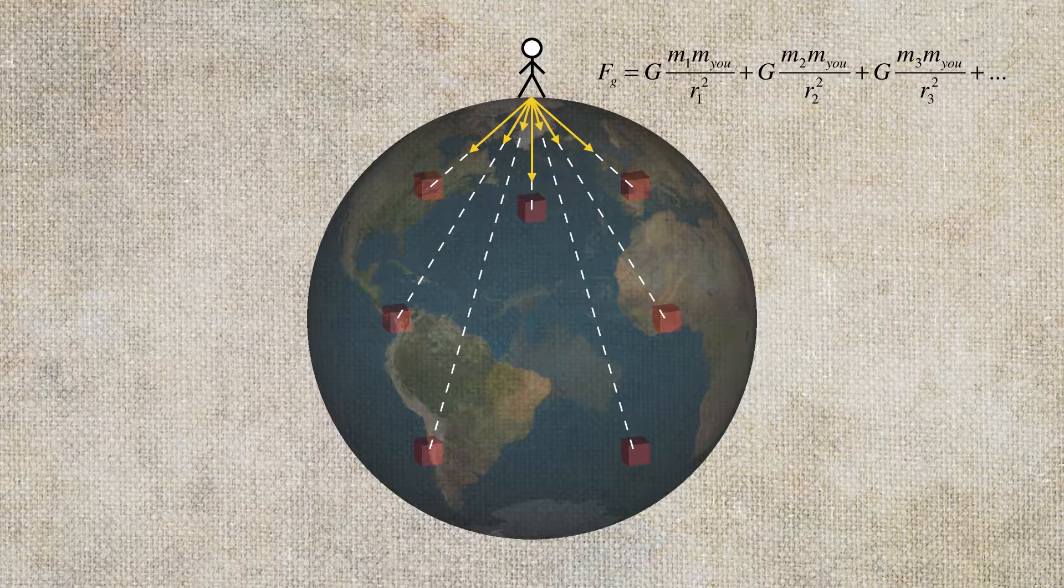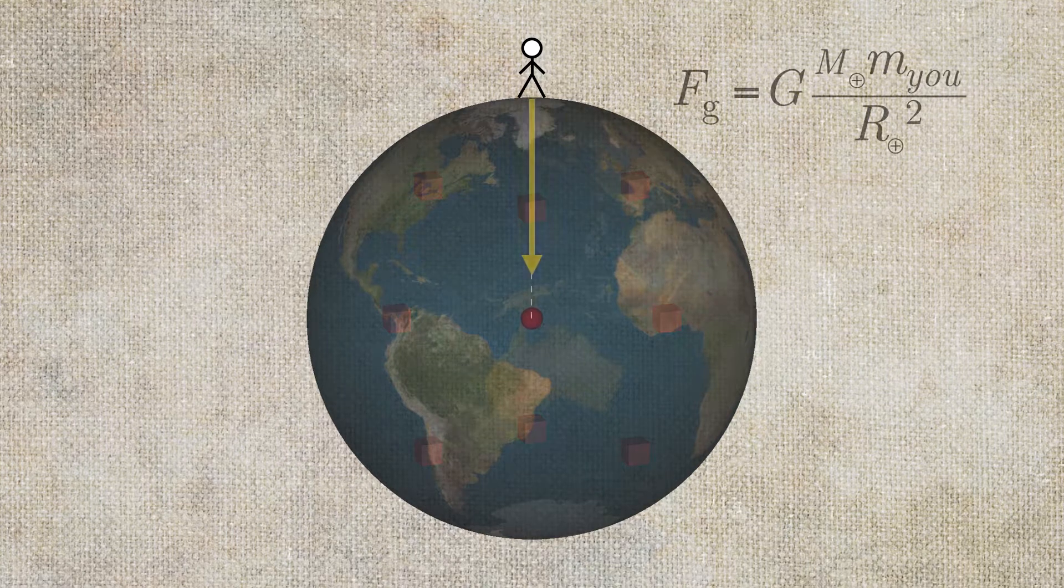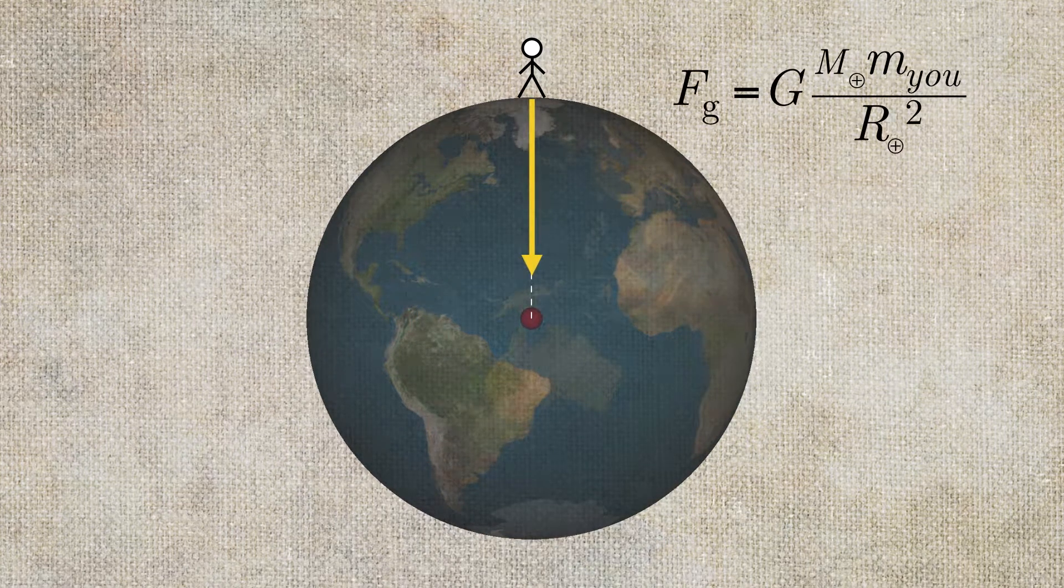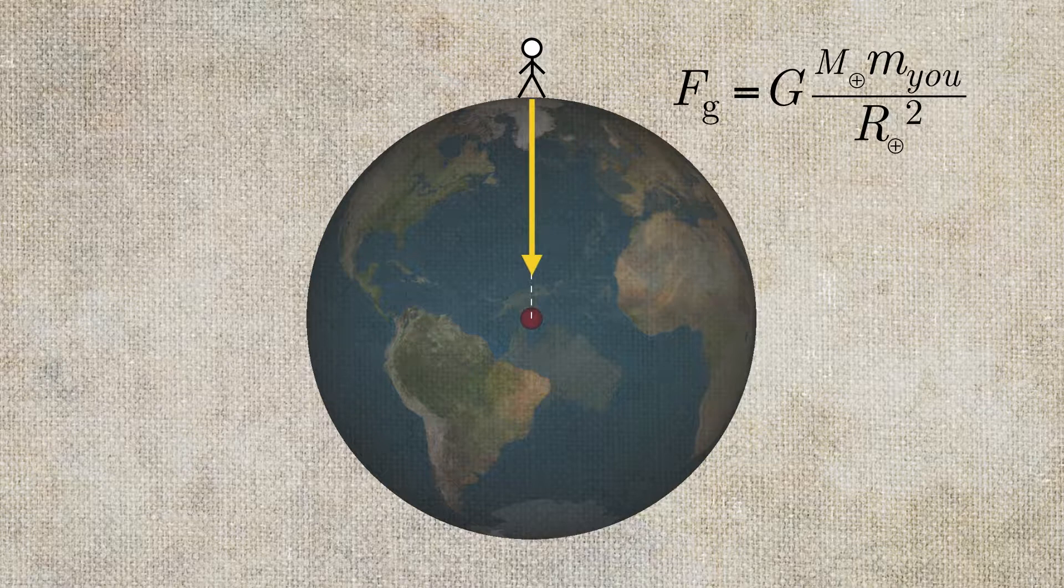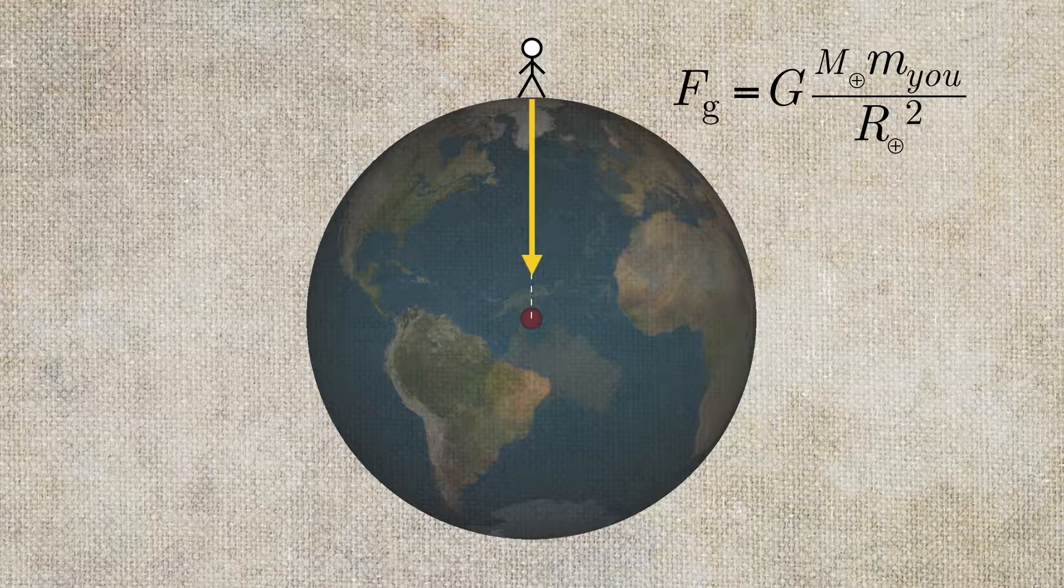Isaac Newton was having none of it, and being the genius that he was, he invented calculus to represent the entire mass of the Earth at the very, very center, giving us the universal law of gravitation that says your weight is just the mass of the Earth multiplied by your mass, divided by the square of the radius of the Earth, multiplying that by the gravitational constant.